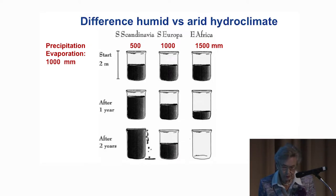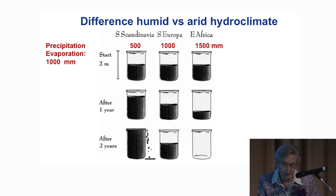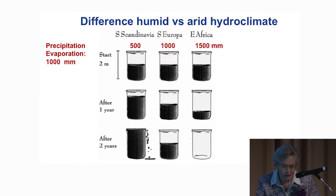The difference between humid and arid climates is important to understand. I demonstrate this with three containers, two meters high, placed in three different places, all with the same rainfall of 1,000 millimeters. The left container stands in southern Scandinavia, where the evaporative demand is 500 millimeters. Starting with one meter of water, the first year we get 1,000 millimeters of rainfall while evaporation consumes 500, leaving half a meter to fill the container. After the second year it overflows.